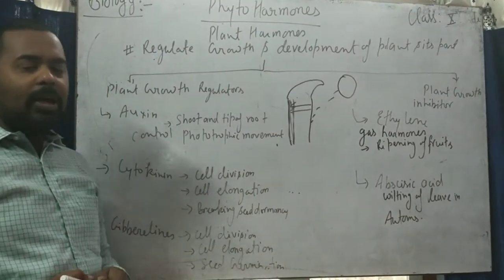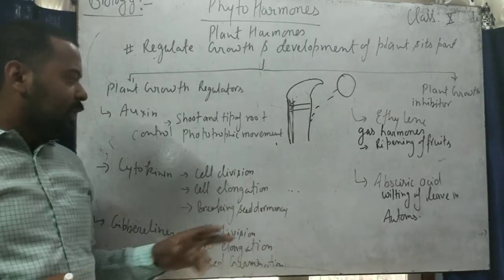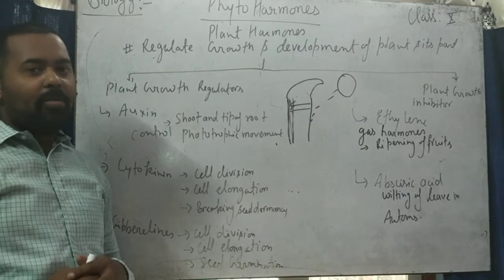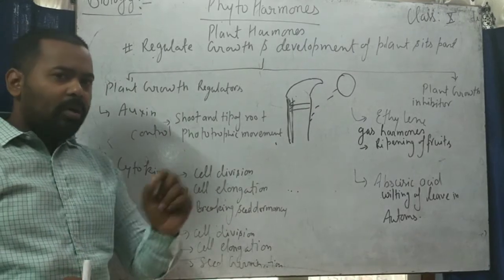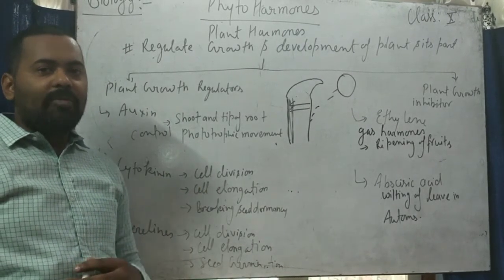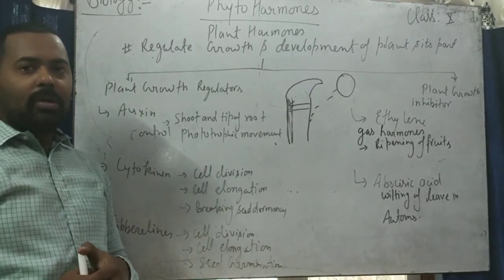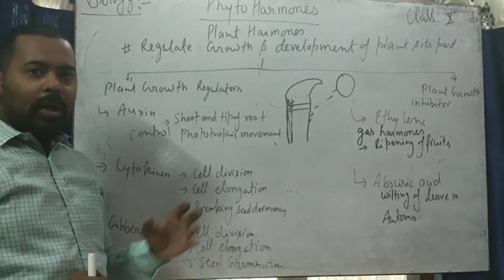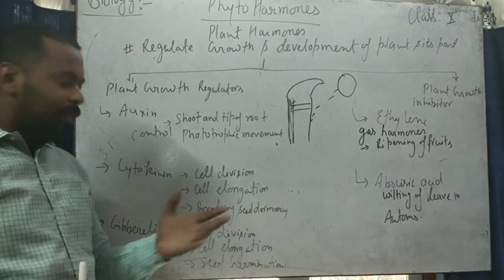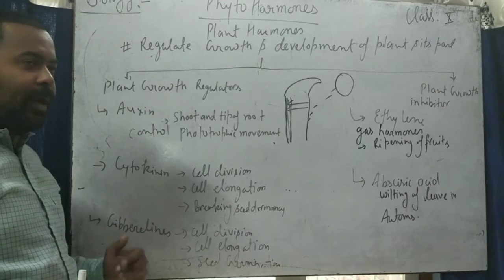Second is cytokinin. Cytokinin is the plant hormone which regulates cell division, cell elongation, and also helps in breaking of seed dormancy. Dormancy means the resting period of the seed. When we apply cytokinin hormones, it breaks the seed dormancy of the particular plant.